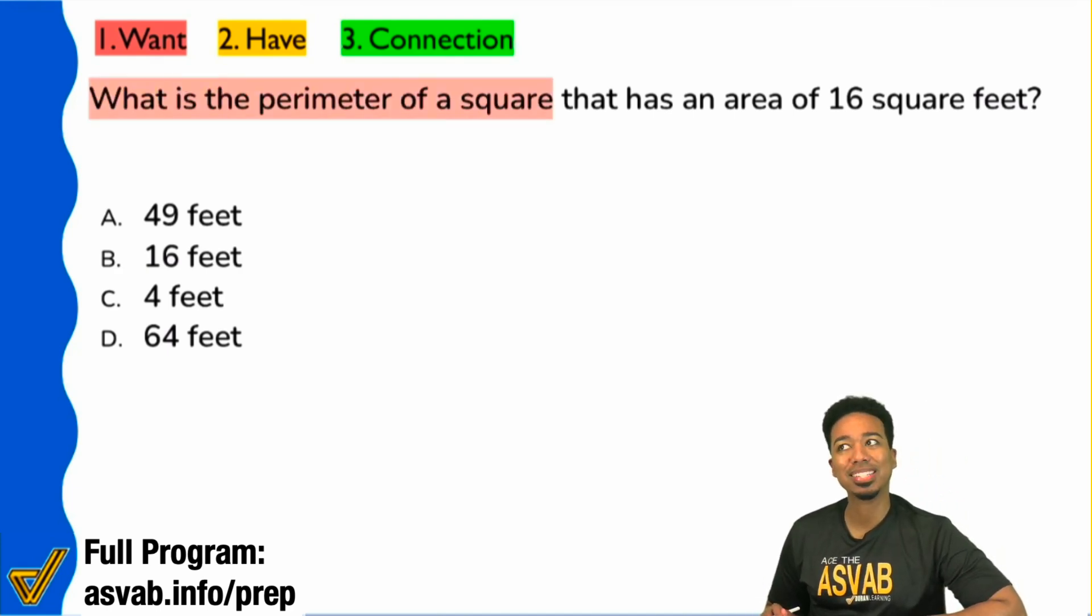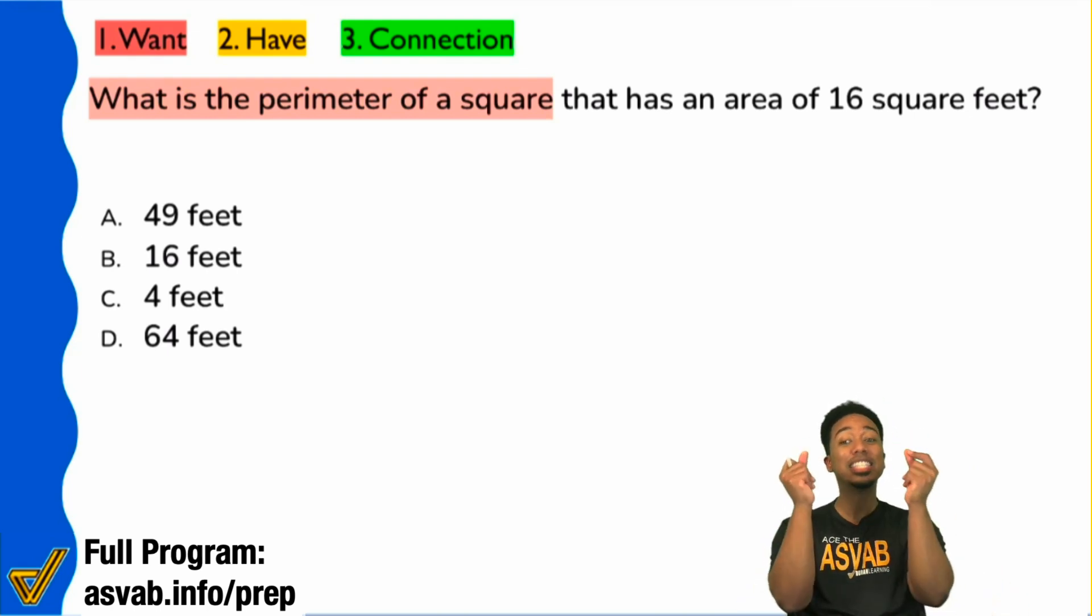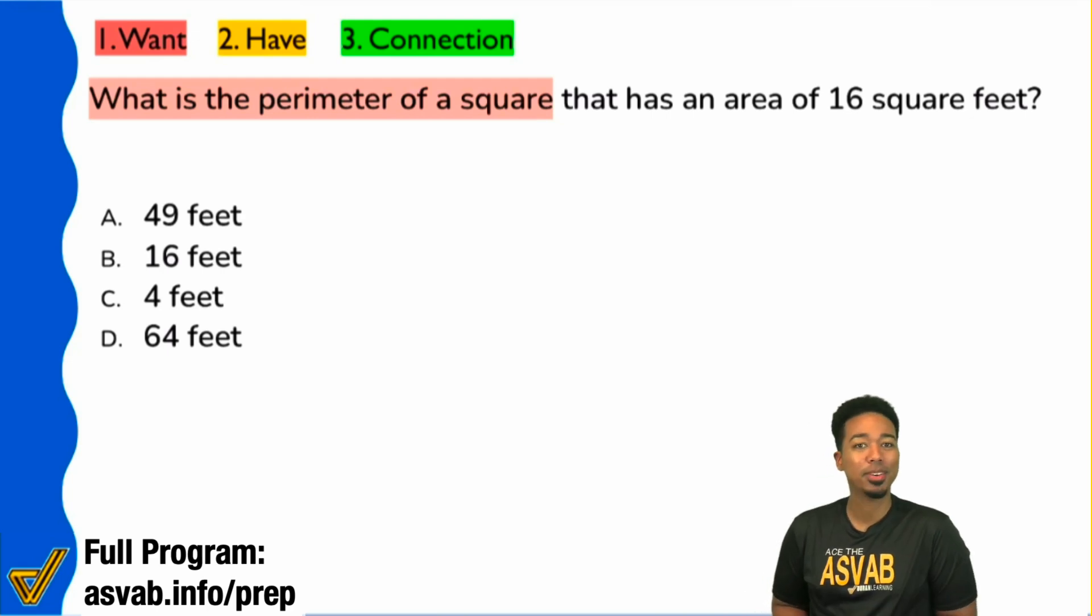My party people, what is the formula for the perimeter of a square? Hit me. Again, you should immediately be ready to pull information like that up. You should be immediately ready. So what is the formula for the perimeter of a square? Four times the side.